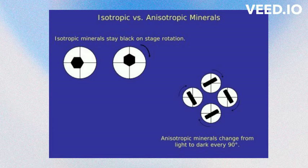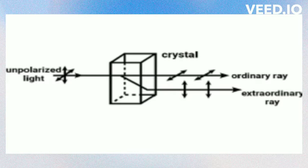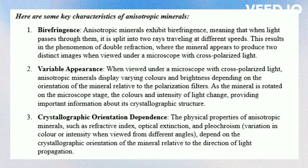Anisotropic minerals are minerals that exhibit different physical properties when measured along different crystallographic directions. This phenomenon is particularly evident in their optical properties, where the minerals display varying behaviors depending on the orientation of light passing through them. Anisotropic minerals typically have more than one refractive index, leading to double refraction or birefringence. When light passes through them, it is split into two rays traveling at different speeds, resulting in the phenomenon of double refraction, where the mineral appears to produce two distinct images when viewed under a microscope with cross-polarized light.